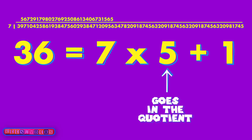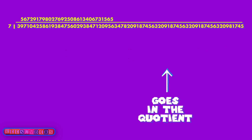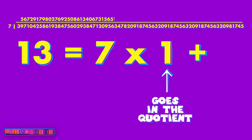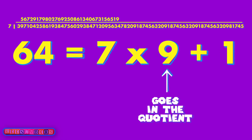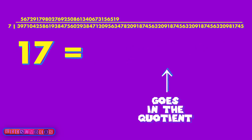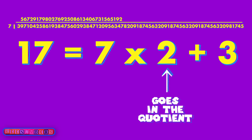You have 36, which is really just 35 and one — put the five upstairs. You have one left over; pull down the three. Seven goes into that one time, but you have six left over. I'm tired — gonna take another water break.